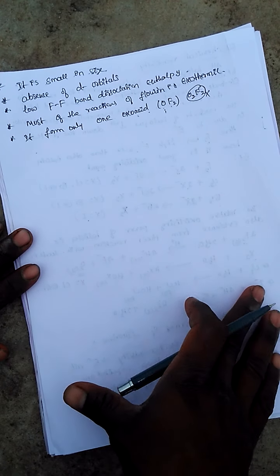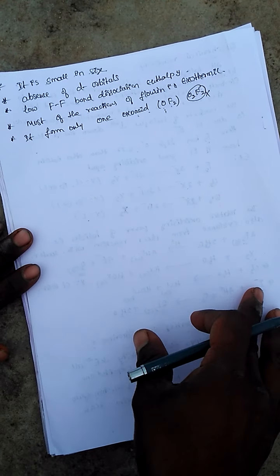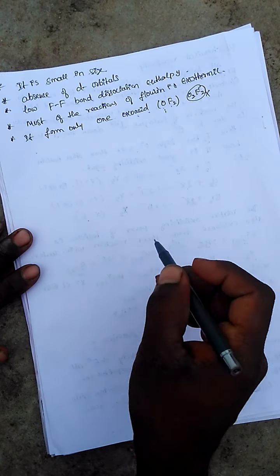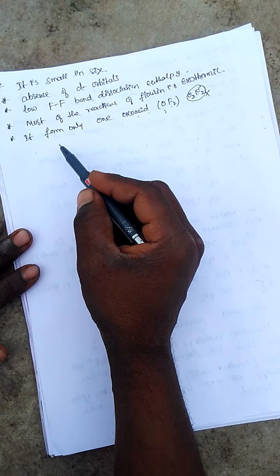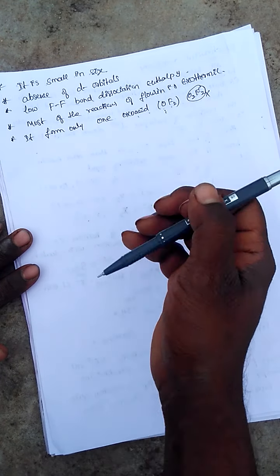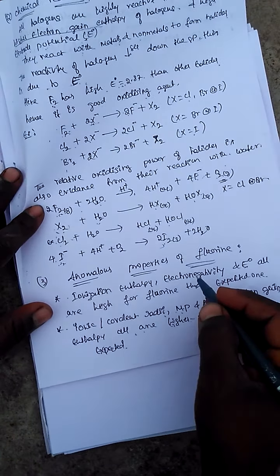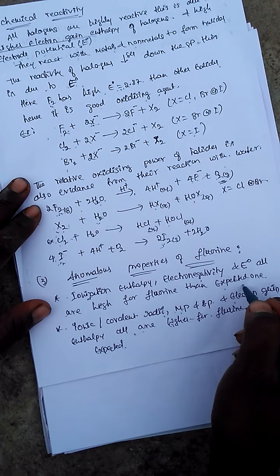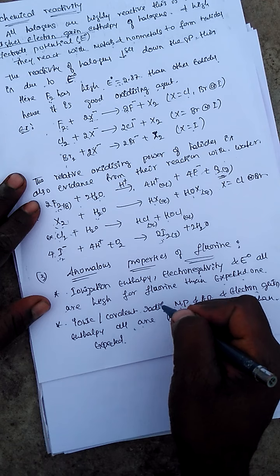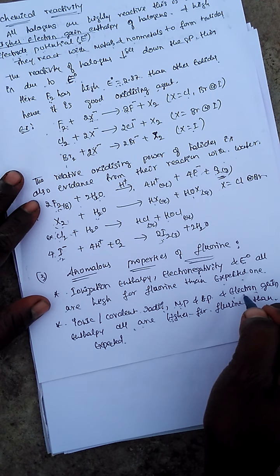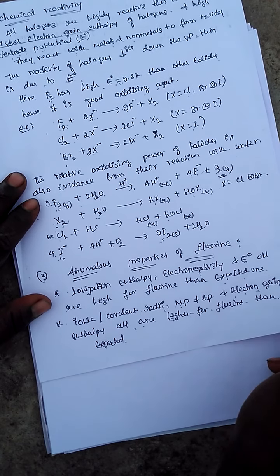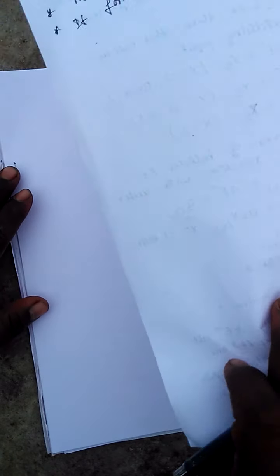To summarize: fluorine is small in size, has absence of d-orbitals, low bond dissociation enthalpy, most reactions are exothermic, and it forms only one oxoacid (OF2). Ionization enthalpy, electronegativity, E0 value, ionic and covalent radii, melting point, boiling point, and electron gain enthalpy — all are higher than expected for fluorine.